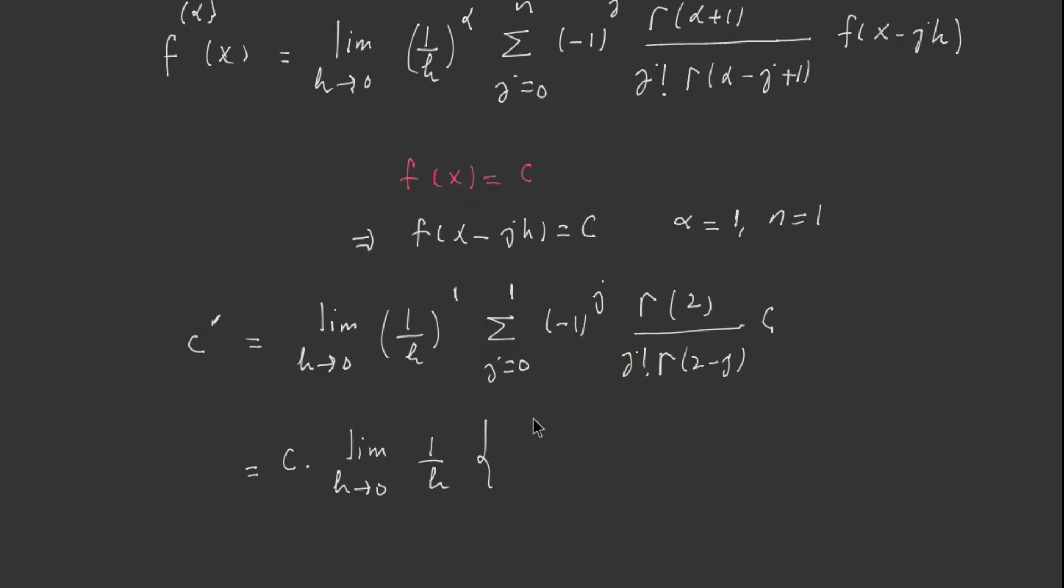Gamma of 2 over 0 factorial, which is 1, and gamma of 2 minus 0, so gamma of 2. And then we have j is 1, negative 1 to the power 1, which is negative 1.